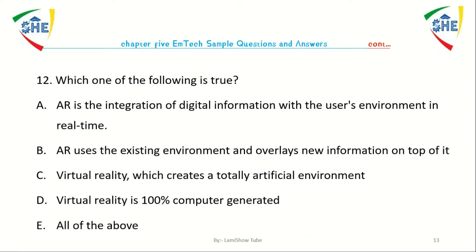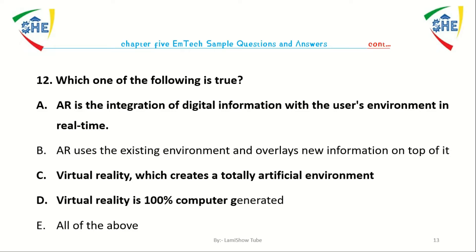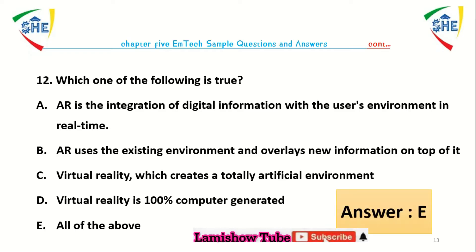Question number 12: Which one of the following statements is true? A) Augmented reality is the integration of digital information with the user's environment in real time. B) Augmented reality uses the existing environment and overlays information on top of it. C) Virtual reality creates a totally artificial environment. D) Virtual reality is a 100% computer-generated environment. E) All of the above.